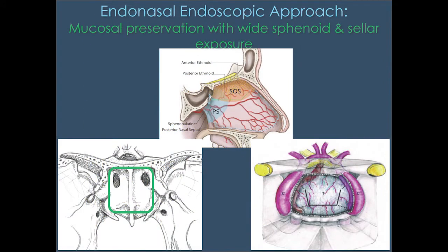Our approach is a mucosal-sparing technique where we make a wide opening into the sphenoid bone and a wide bony opening of the sella. We like to get right up to the edge of the carotid arteries — that's really important for adequate exposure. The incision is made in the mucosa, which gets pushed down, then we remove the bone to create our trajectory.